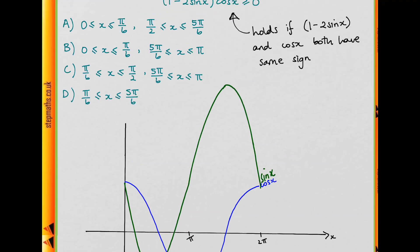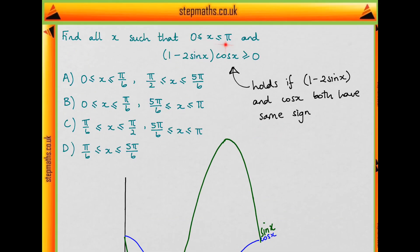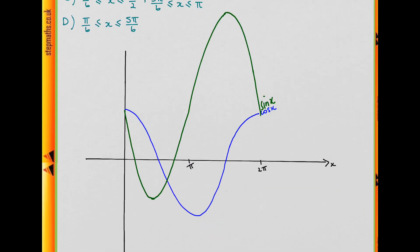And we want them to have the same sign. And also remember we're only looking at x between 0 and π. I just drew up to 2π because I find it easier. So between 0 and π, when the green curve and the blue curve are either both positive or both negative.